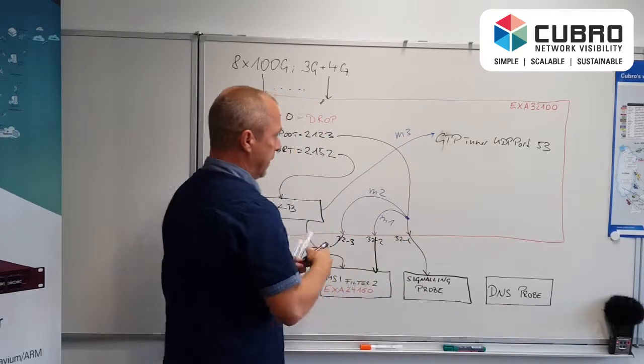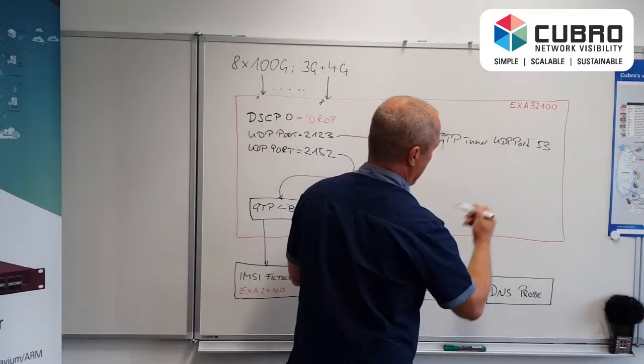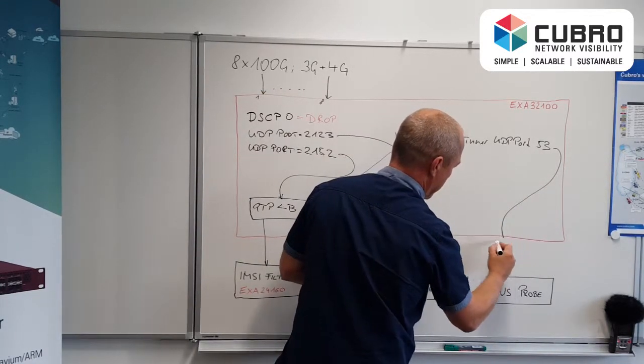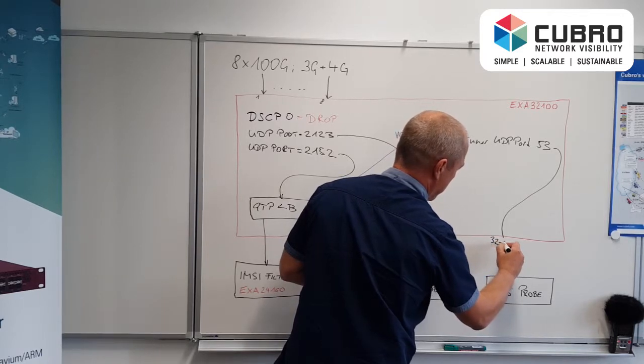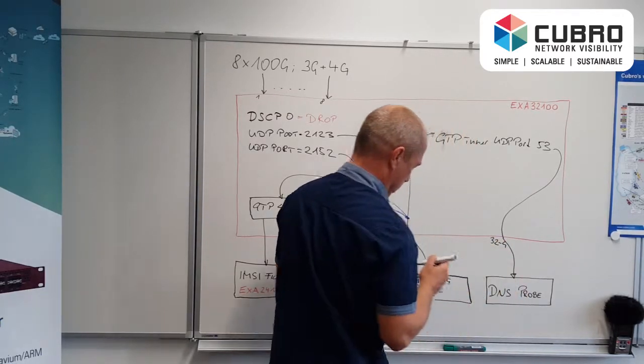That's my M3. And this one, the result of this, you just feed here to the port 32.4 and then we have the DNS program.